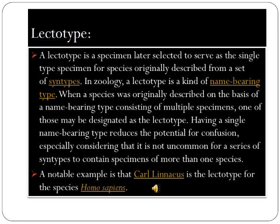A lectotype is a specimen later selected to serve as the single type specimen for a species originally described from a set of syntypes. When a species was originally described on the basis of a name-bearing type consisting of multiple specimens, one of those may be designated as the lectotype. Having a single name-bearing type reduces the potential for confusion, especially since it is not uncommon for a series of syntypes to contain specimens of more than one species. A notable example is that Carl Linnaeus is the lectotype for the species Homo sapiens.